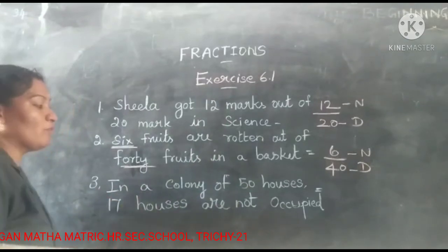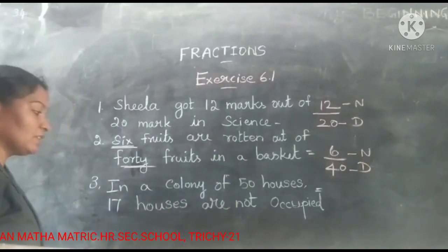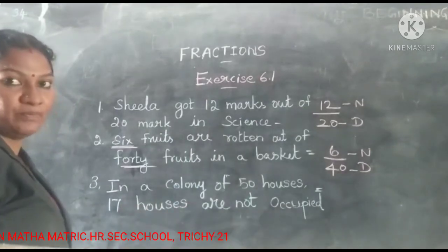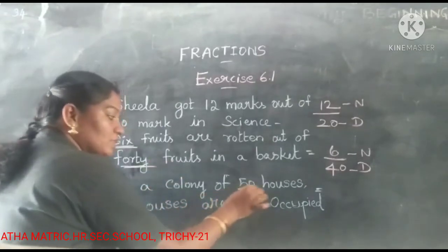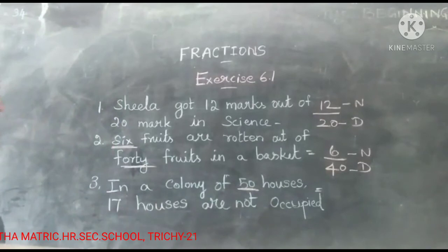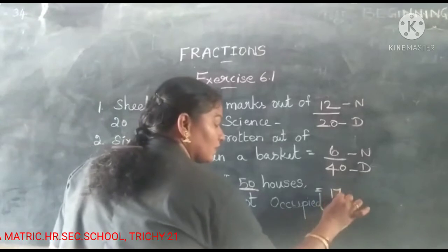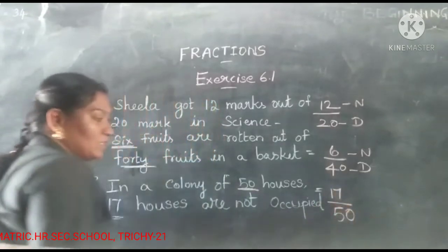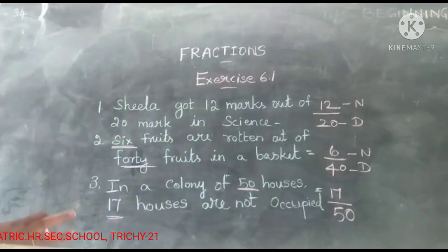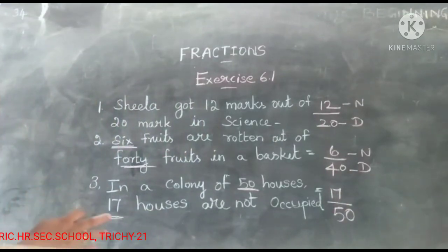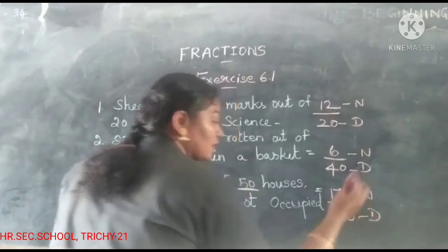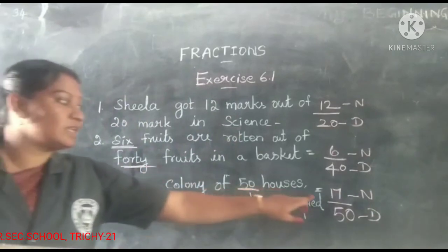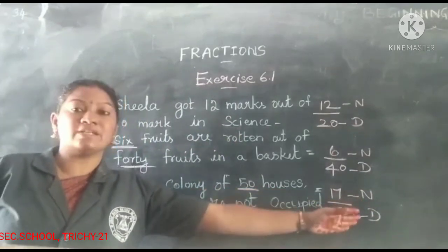Third one: in a colony of 50 houses, 17 houses are non-occupied. The fraction is 17 by 50. So 17 is the numerator and 50 is the denominator.